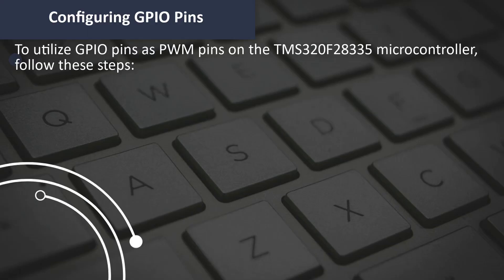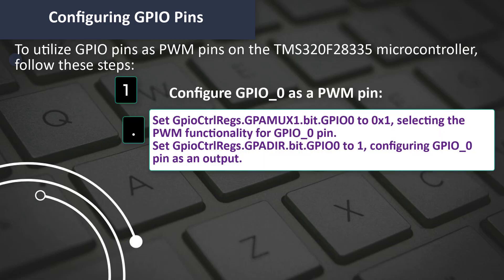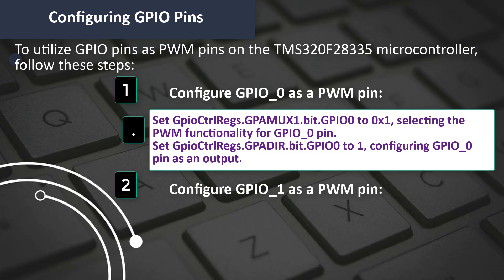Configuring GPIO pins. To utilize GPIO pins as PWM pins on the TMS-320F28335 Microcontroller, follow these steps. Step 1: Configure GPIO_0 as a PWM pin. Set GpioCtrlRegs.GPAMUX1.bit.GPIO0 to 0x1, selecting the PWM functionality for the GPIO_0 pin. Set GpioCtrlRegs.GPADIR.bit.GPIO0 to 1, configuring GPIO_0 pin as an output.